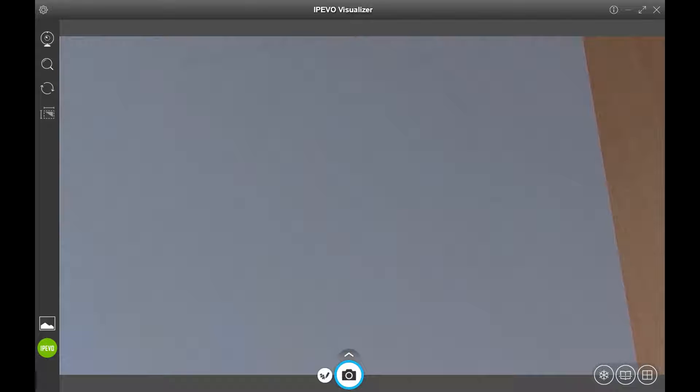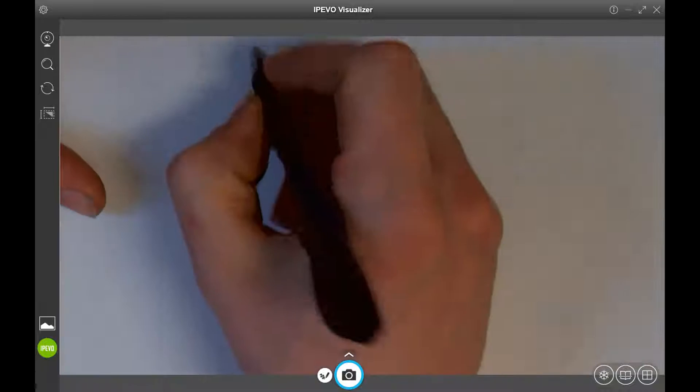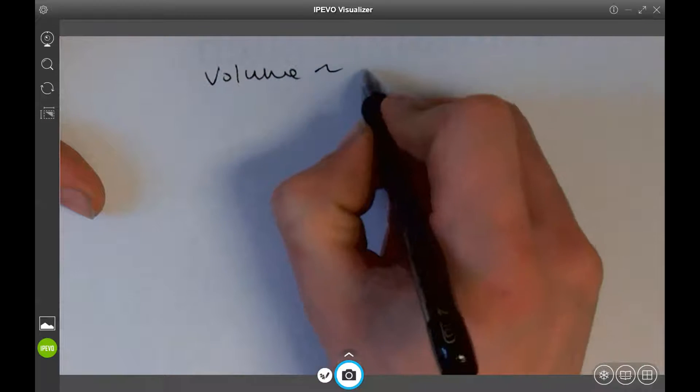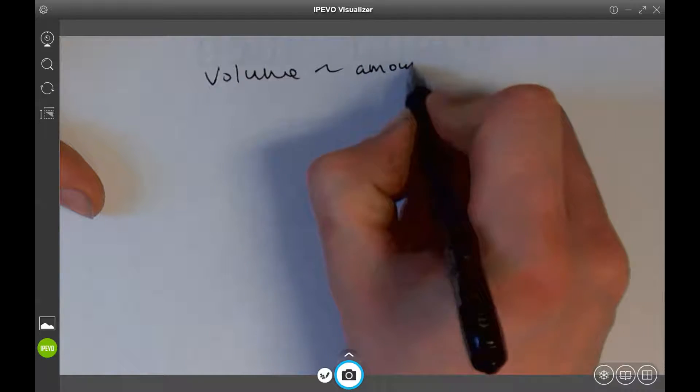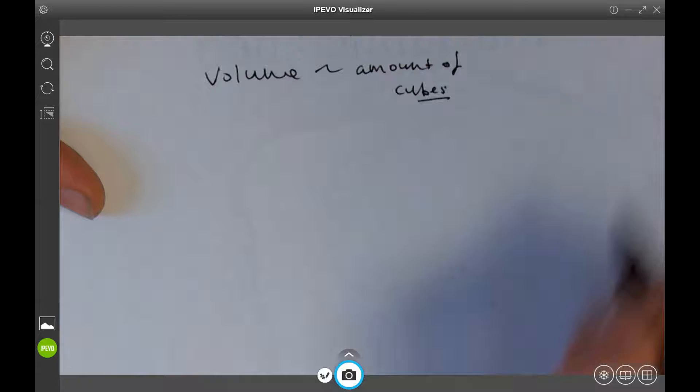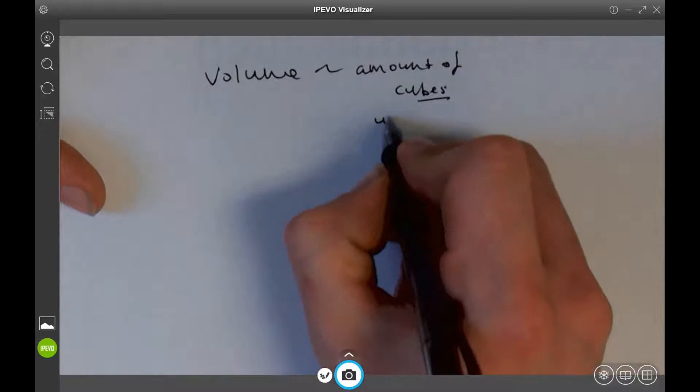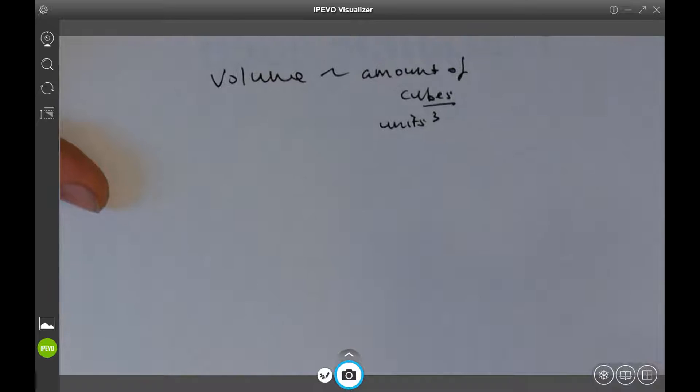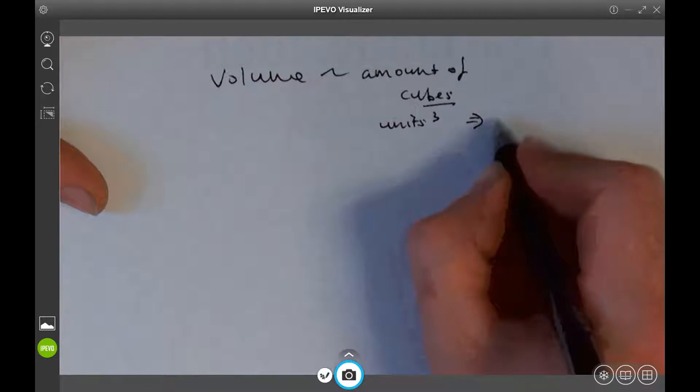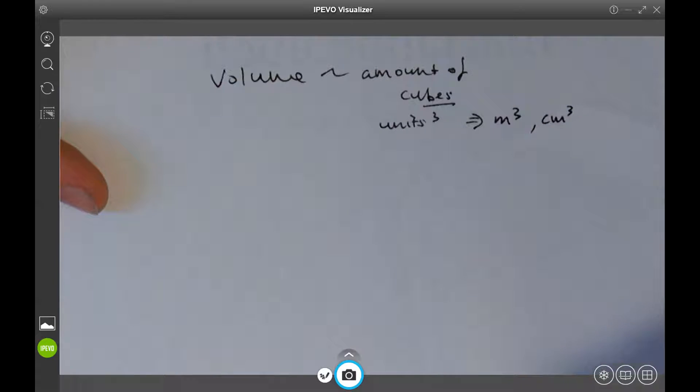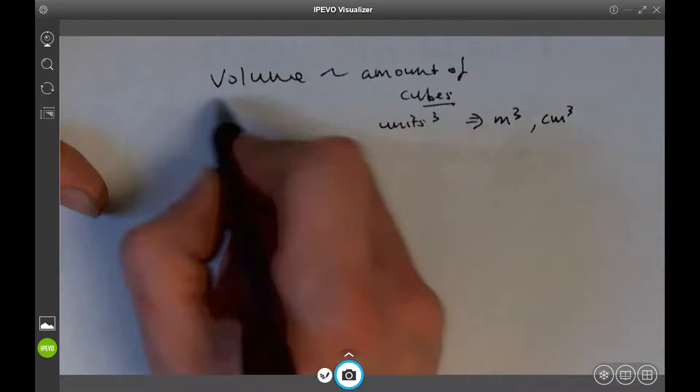Alright, in my last video I introduced the idea of volume. Once again, volume is the number or amount of cubes or blocks. It's measured in units cubed with a little three - units³. So it could be meters³, centimeters³, but we usually say cubed. Alright, we did that in the last video.